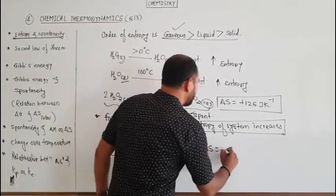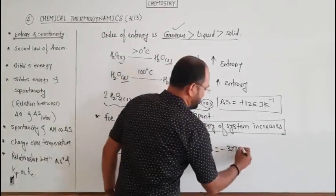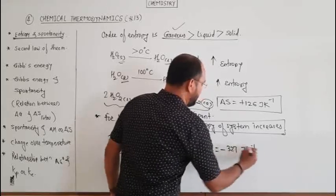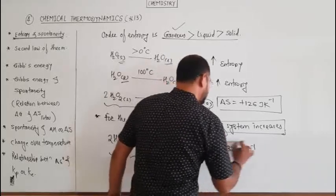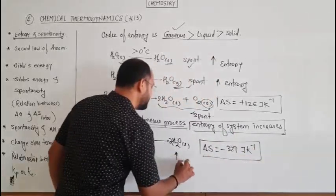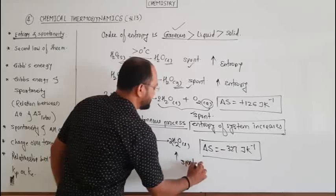In this process, delta S is equal to minus 327 joule per kelvin. But it is still a spontaneous process. So here the system's entropy decreases, yet the process is spontaneous — meaning the earlier criterion alone is not sufficient.